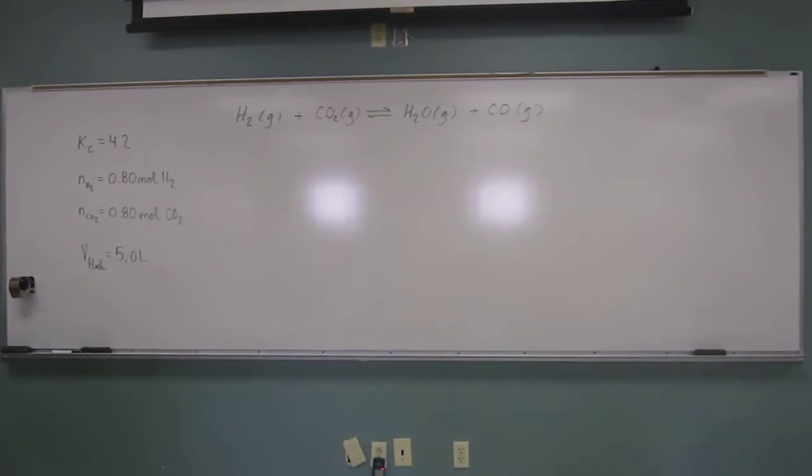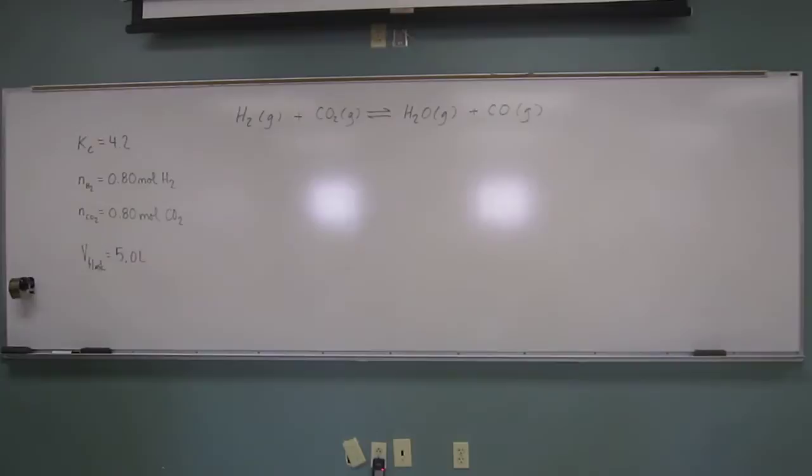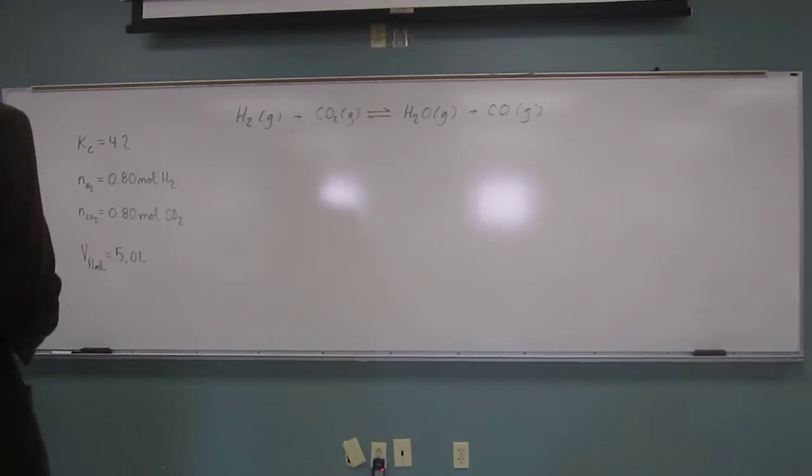Okay, so let's attempt this one. It says the equilibrium constant Kc for the reaction hydrogen gas plus carbon dioxide gas goes to water gas plus carbon monoxide gas is 4.2 at 1,650 degrees Celsius. Initially, a 0.80 mole of hydrogen and 0.80 mole sample of carbon dioxide were injected into a 5-liter flask. Calculate the concentration of each of these species at equilibrium.